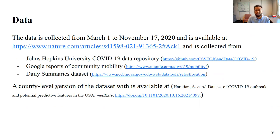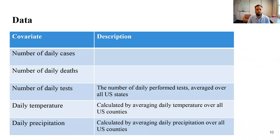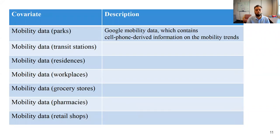The data we collected spans March 1st to November 17th, 2020, from the Johns Hopkins University data repository, Google Community Mobility Reports, and daily summaries. A county-level version of the dataset is available online. The features include number of daily cases, daily deaths, daily tests, country-average temperature and precipitation, and mobility data from Google — including parks, transit stations, residences, workplaces, groceries, pharmacies, and retail shops.